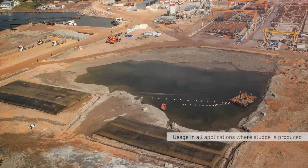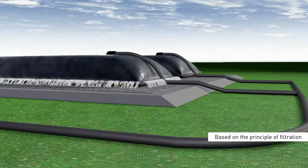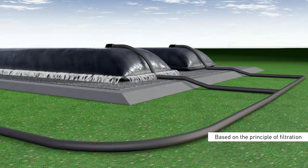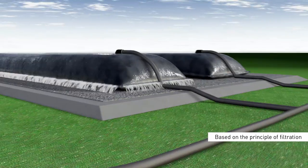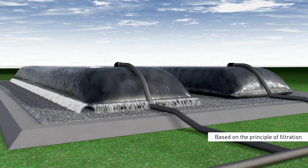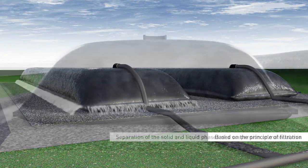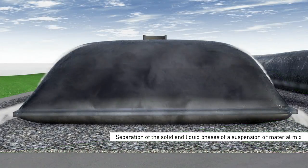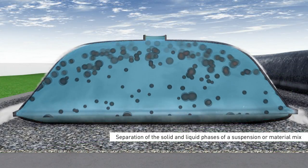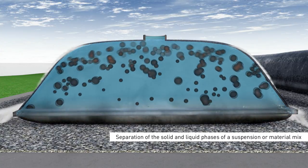Geotextile dewatering tubes lend themselves to use in all applications where sludge is produced. Water removal by means of dewatering tubes is based on the principle of filtration, achieved through the use of a special high-performance woven filter. The filtration process involves the mechanical separation of the solid and liquid phases of a suspension or material mix.